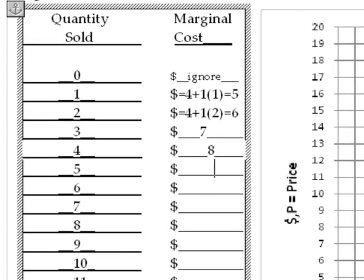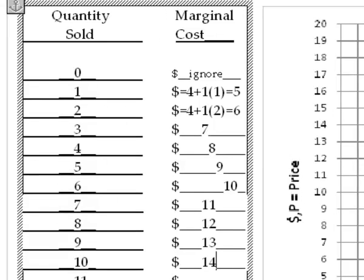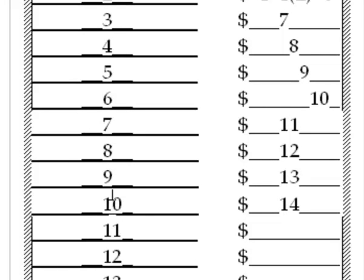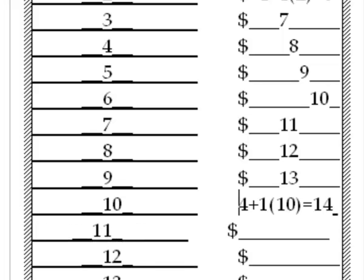So we go 5, 6, 7, 8, 9, 10, 11, 12, 13, 14. And just to make sure we are calculating correctly, let's look at the 10th unit. The marginal cost is 4 plus 1 times 10 which should equal 14. Yes. And we could keep going but there comes a point when you can stop and this is about it.